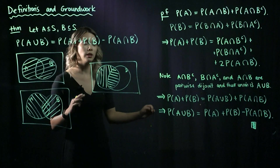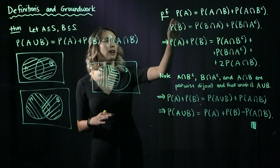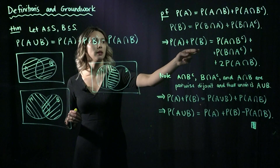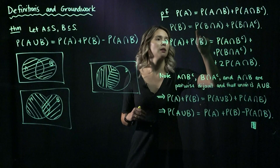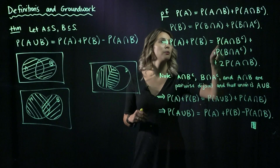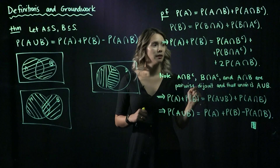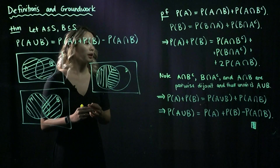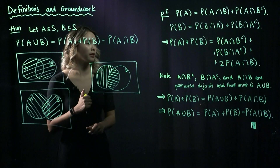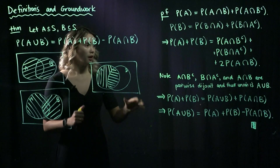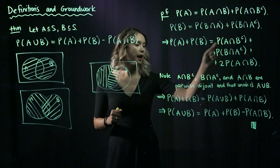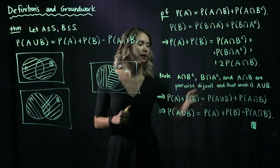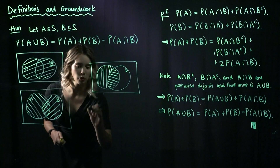Nothing crazy happening yet. Let's go ahead and add these two things together. The probability of A plus the probability of B equals the right-hand sides combined: the probability of A intersect B complement, plus the probability of B intersect A complement, plus two times the probability of A intersect B. Now let's take a moment to look at A intersect B complement, B intersect A complement, and A intersect B — with some pictures.